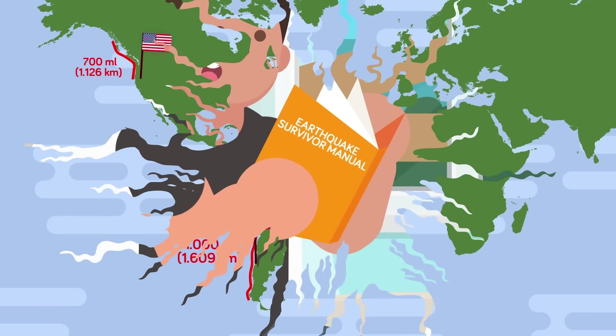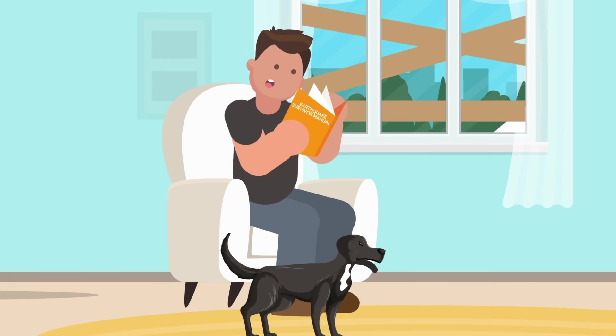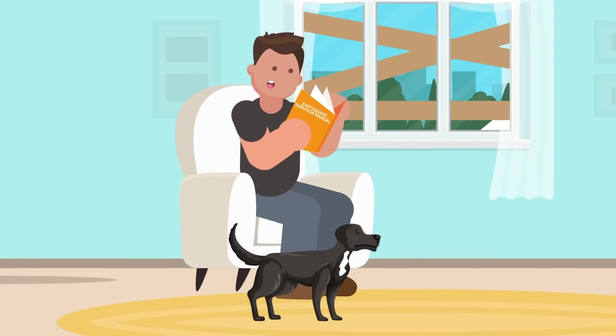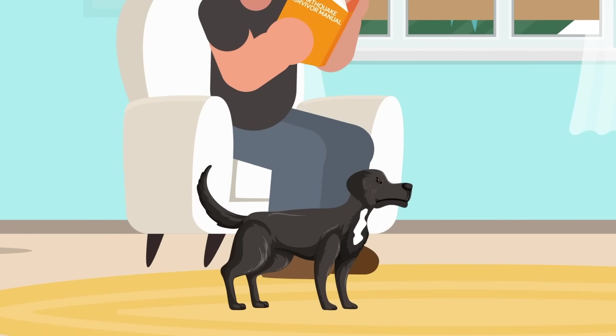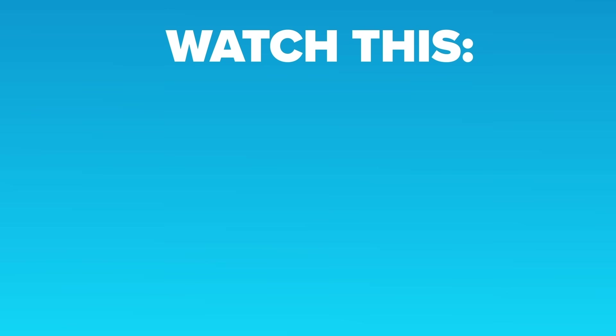So what should you do if you live in the Pacific Northwest? Reinforce your home, learn earthquake safety, and hope for the best. Oh, and get a dog, you'll know the earthquake is coming before anyone else. Now go check out the worst natural disasters in human history or this video instead!